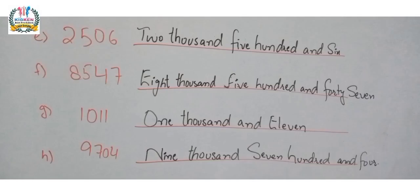Next part number E has question 2506. So we can write these numbers in words: two thousand five hundred and six. Six has place value ones, zero has place value tens, five has place value hundreds, and two has place value thousands.